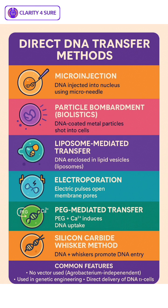Next is particle bombardment or biolistics, also known as the gene gun method. Microscopic gold or tungsten particles coated with DNA are shot into plant tissues at high velocity. It's commonly used in monocots like rice, maize, and wheat.